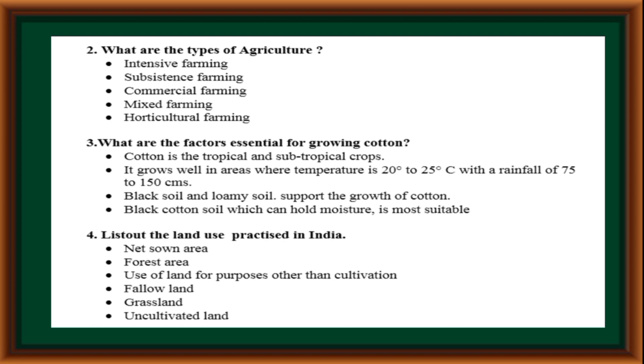What are the types of agriculture? Intensive farming, subsistence farming, commercial farming, mixed farming, horticultural farming.